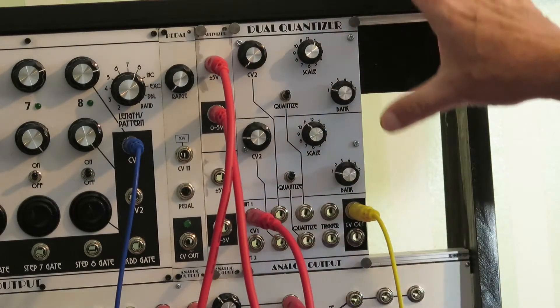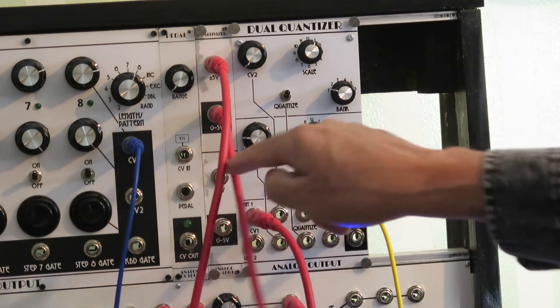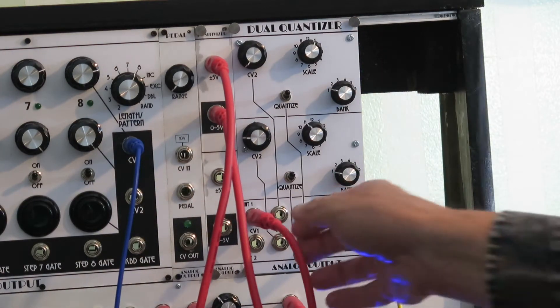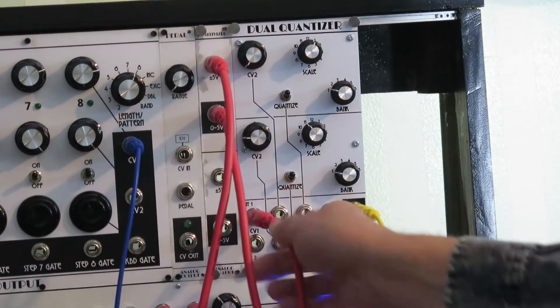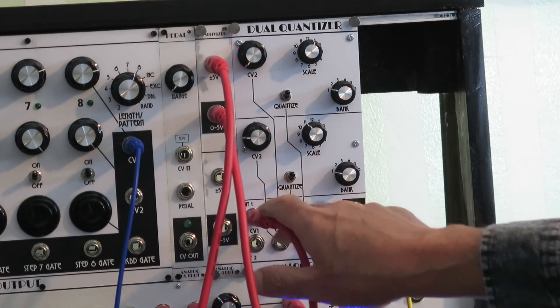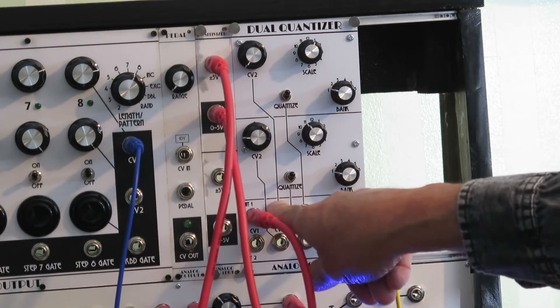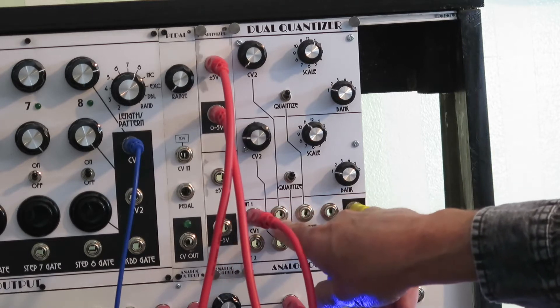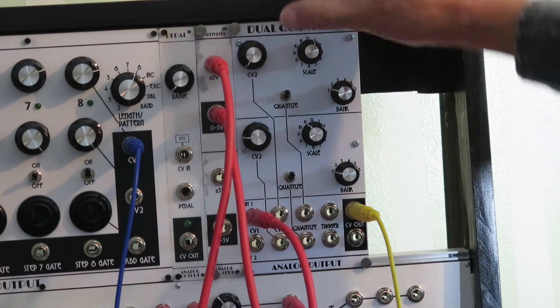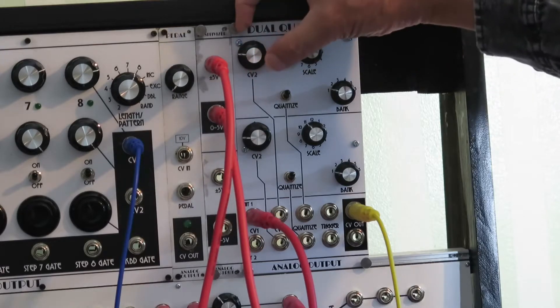Okay, so this is a dual quantizer. It's got two quantizers here, the top row pertains to one, the bottom row pertains to the other. We've got a control voltage input. We've actually got another control voltage input, and that's an offset. This one is the control voltage that's quantized. This is added to the result of the quantization. And this is normalized to five volts and it's attenuated here. So with nothing plugged in, we can still just turn the knob to offset it.